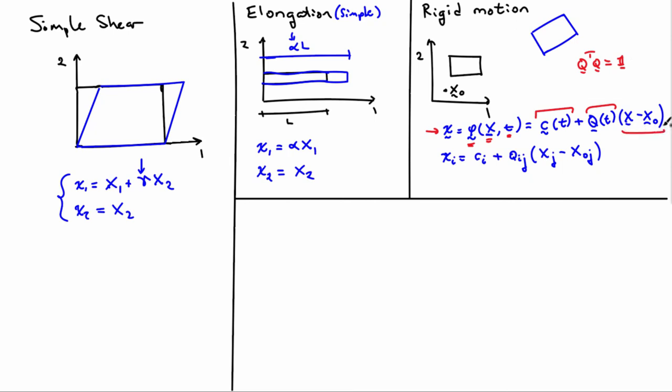And it's Q times X minus X naught. So what this effectively does is rotates the body about the point X naught. Written out in components, you have x_i is equal to C_i plus Q_ij—a second order tensor—times X_j minus X naught j. So this is the deformation map for rigid rotation or rigid motion, with a translation part and a rotation part.